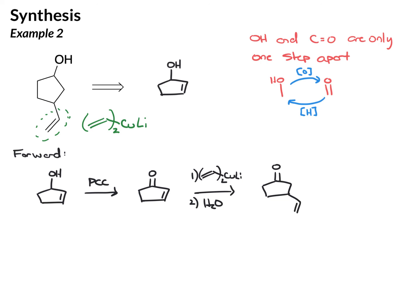Now we need the alcohol. And to get to the alcohol, we just need to do a reduction. This is a ketone. You can use LAH or sodium borohydride. I'll just use sodium borohydride. And there's our final product.